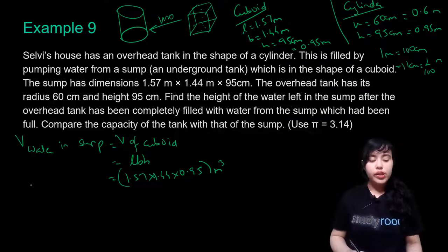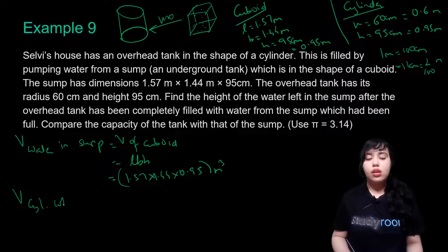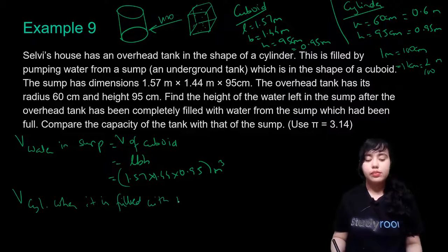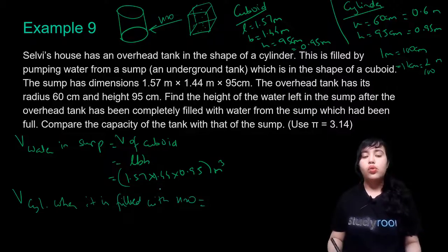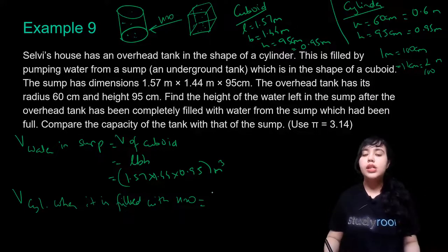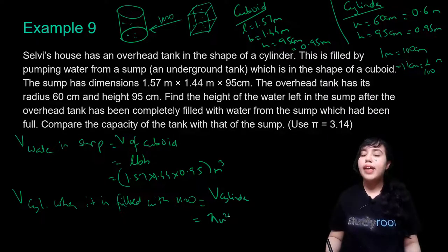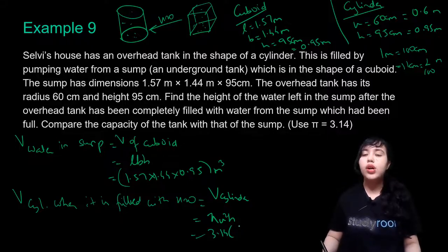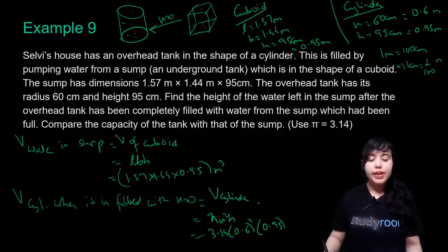Now we find the volume of the cylinder when it is filled with water. When the cylinder is filled, water takes up the shape of the container, so the volume of water equals the volume of the cylinder: πr²h = 3.14 × (0.6)² × 0.95 cubic meters.